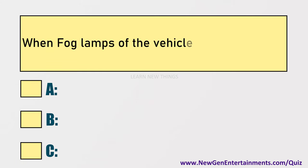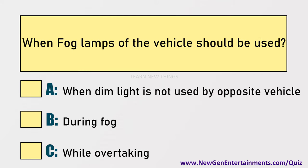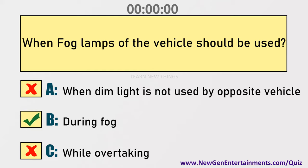When should fog lamps of the vehicle be used? Options are: A) When dim light is not used by the opposite vehicle, B) During fog, C) While overtaking. Answer: Option B, During fog.